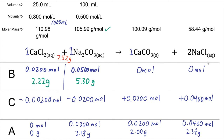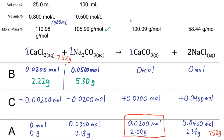Checking conservation of mass: we started with 7.52 grams of reactants. Adding the after-line masses — 3.18 + 2.00 + 2.34 — the total is also 7.52 grams, confirming the calculations are correct. For this lab, the key result is that 2.00 grams of calcium carbonate precipitate is predicted when mixing 25 mL of 0.800 M CaCl₂ with 100 mL of 0.500 M Na₂CO₃.